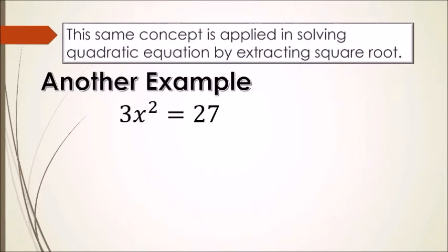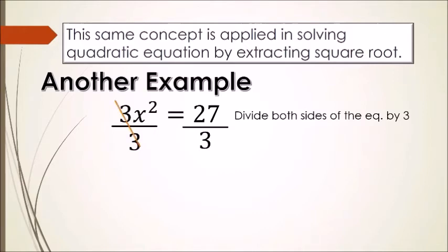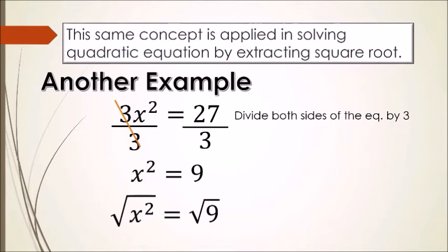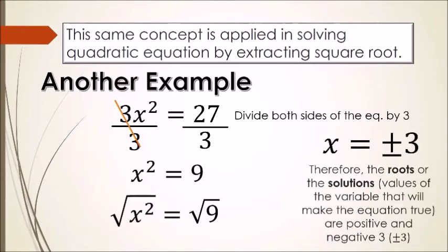Another example: 3x² = 27. What is the value of x? To solve this, we divide both sides of the equation by 3: 3÷3 = 1, so x² = 27÷3 = 9. We can now extract the roots: √(x²) = x, and √9 = ±3. Therefore, the roots or solutions are x = +3 and x = −3.